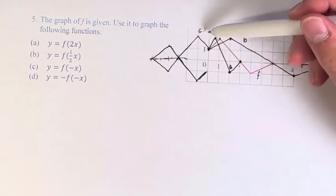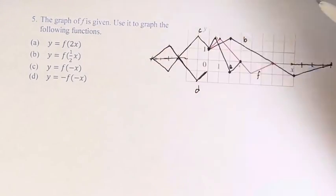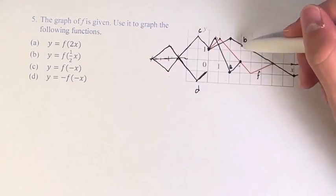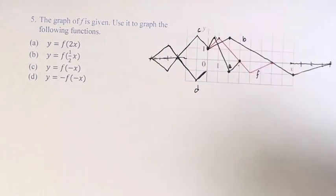In the same way that this is mirrored about the y-axis, this is mirrored about the x-axis. So this is d. So we have a, b, c, and d, all from the graph of f.